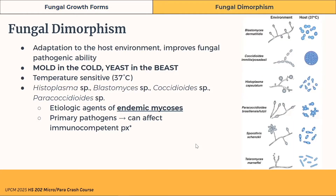Now let's talk about fungal dimorphism. Fungi can exist as yeasts or molds. Dimorphism is the way the fungus survives and adapts to the host environment and improves their pathogenic ability. The most important thing to remember is: molds in the cold, and yeasts in the heat. Meaning the fungus is a mold outside the human body where it's colder, and inside the body they become yeasts. This is a temperature-sensitive process with a cutoff at usually 37 degrees Celsius.